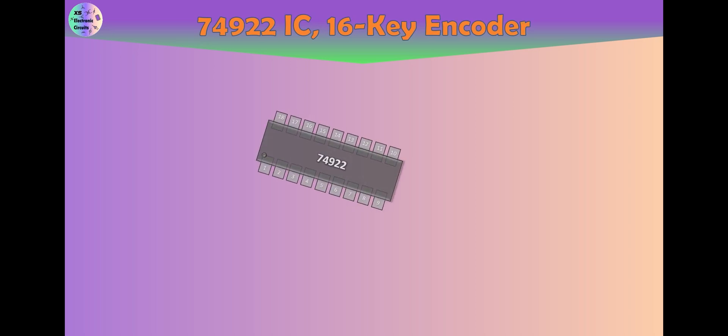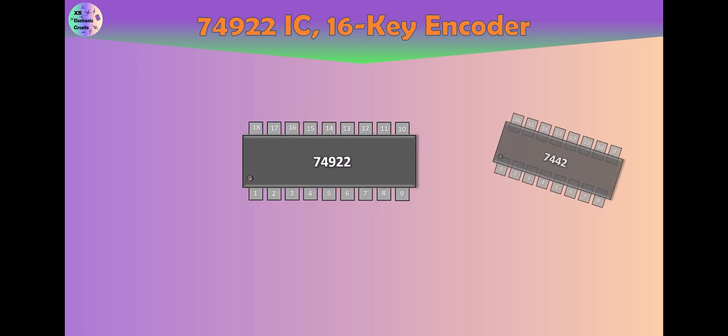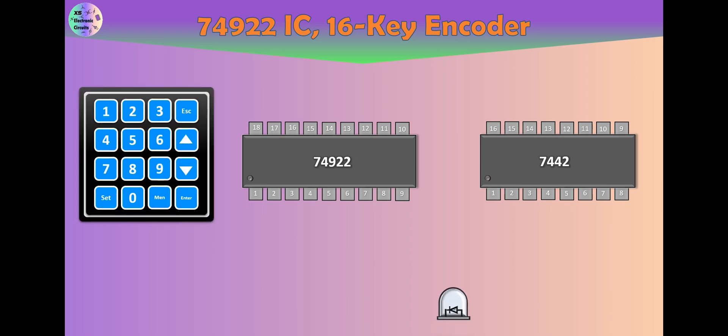The outputs of the IC74922 are in BCD format and by pressing each of these 16 keys, a 4-bit binary number is displayed at the output of this IC.